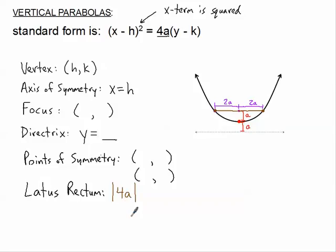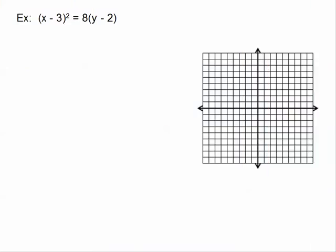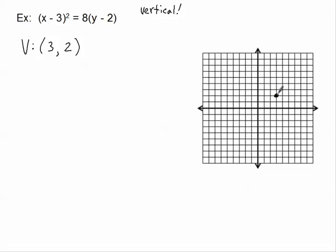Let's look at one with specific numbers. The first thing I'm noting is that I only see one thing that's being squared, so it's a parabola. Since it's the x term that's being squared, this is a vertical parabola. The first thing I'd like to find is the vertex. The vertex is (h, k): h coming from the x quantity is 3, k coming from the y quantity is 2. So the vertex is (3, 2) — I'm going to plot that.